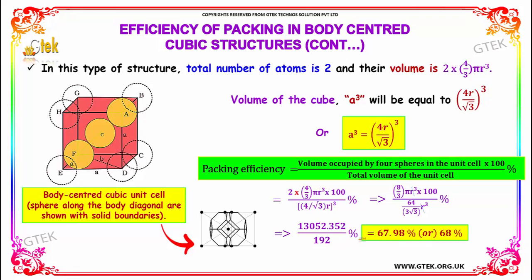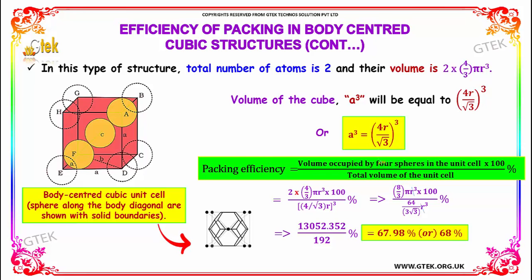So the packing efficiency is approximately 67.9%, or about 68%. A small correction: this structure has 2 spheres, not 4, which is why the number of atoms is 2.